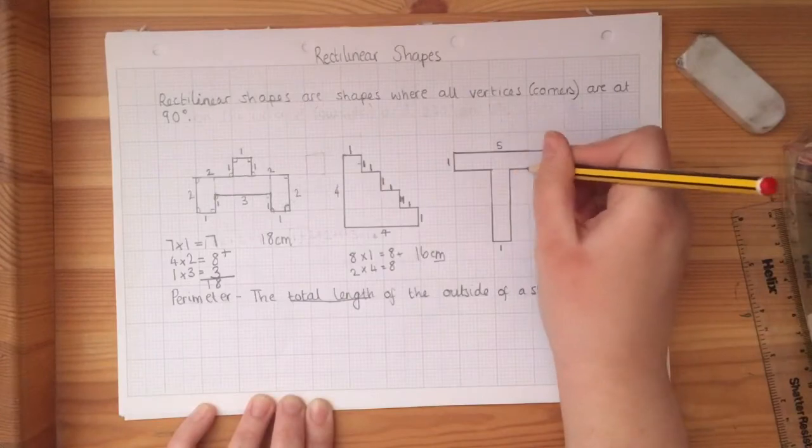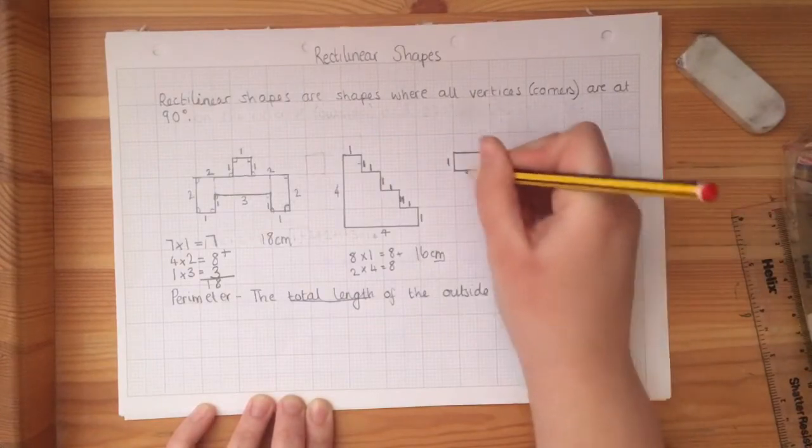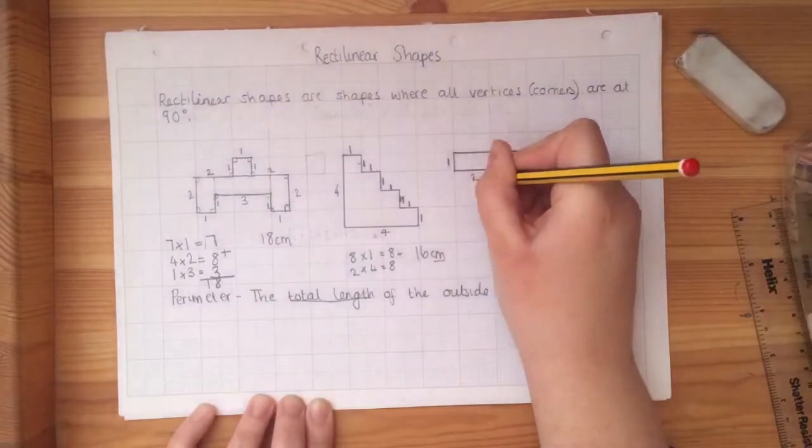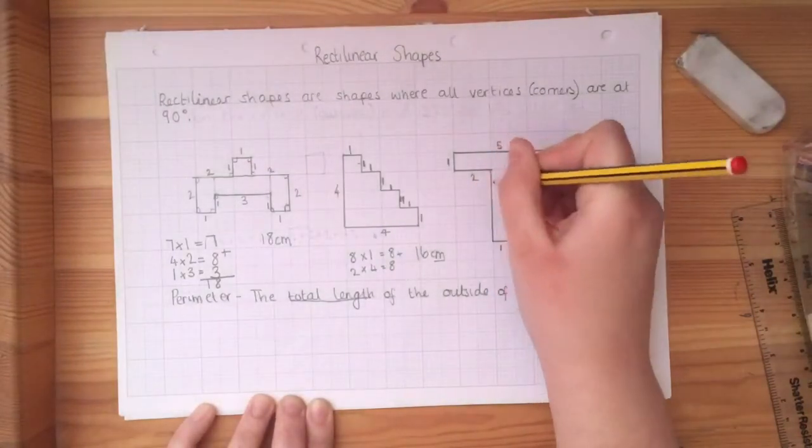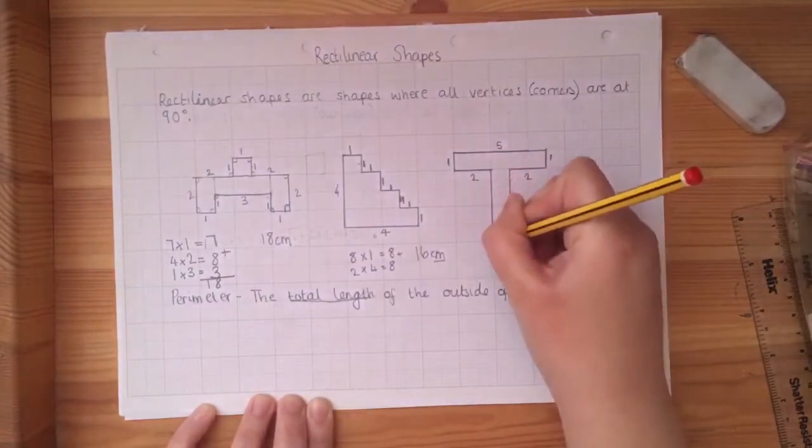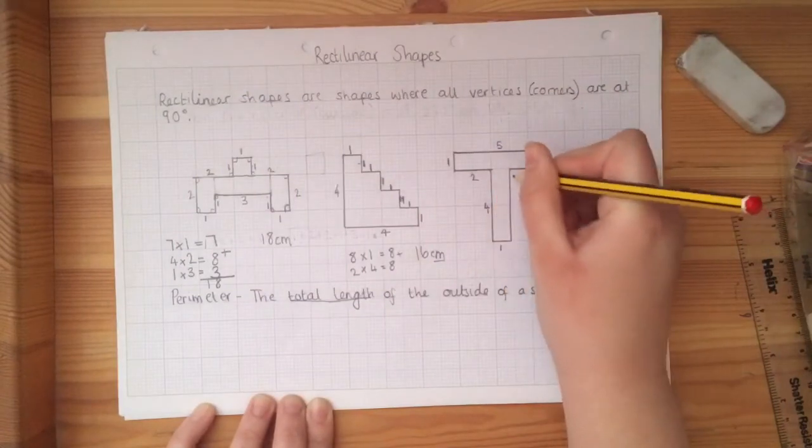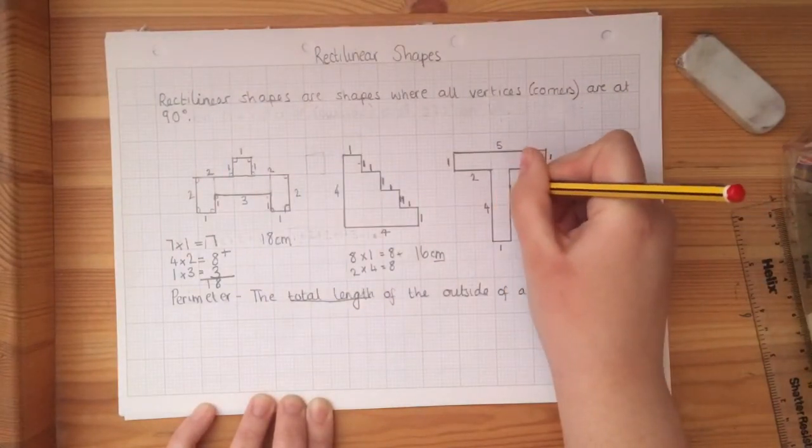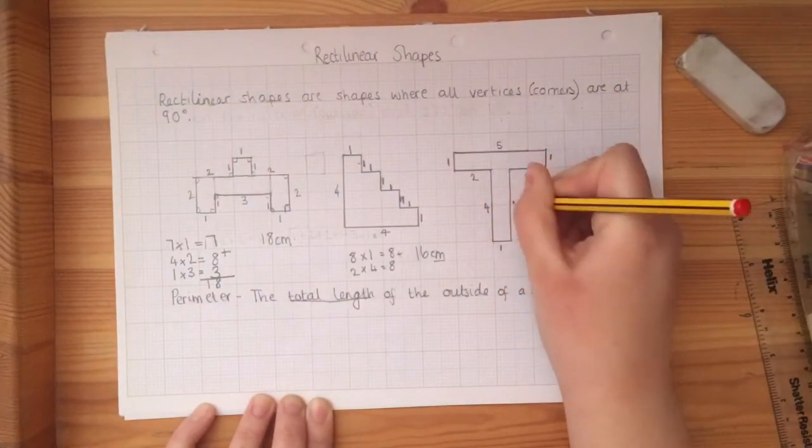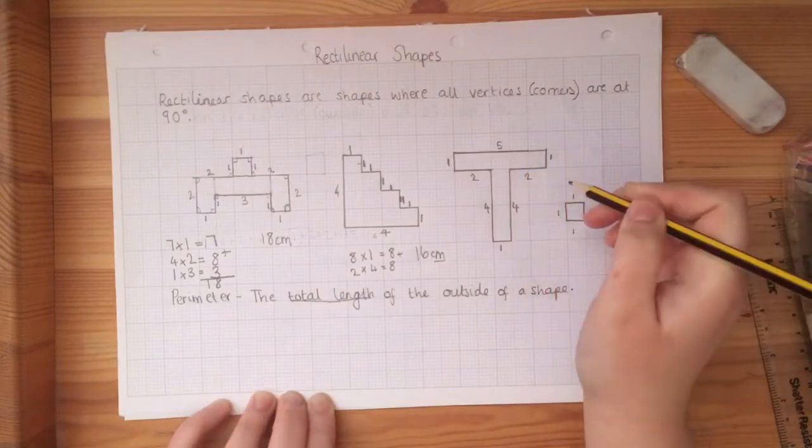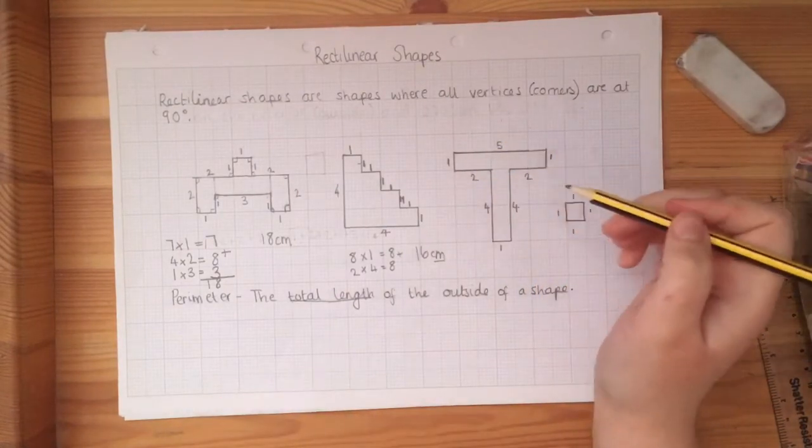Underneath, we've got one, two, and it's the same for the other side. One, two. And then along this bit, we've got one, two, three, four. And then the same on this side. One, two, three, four. So that's the shape written out for you.